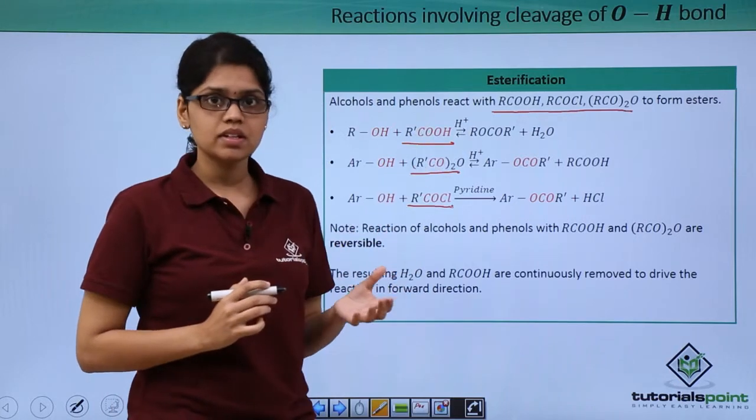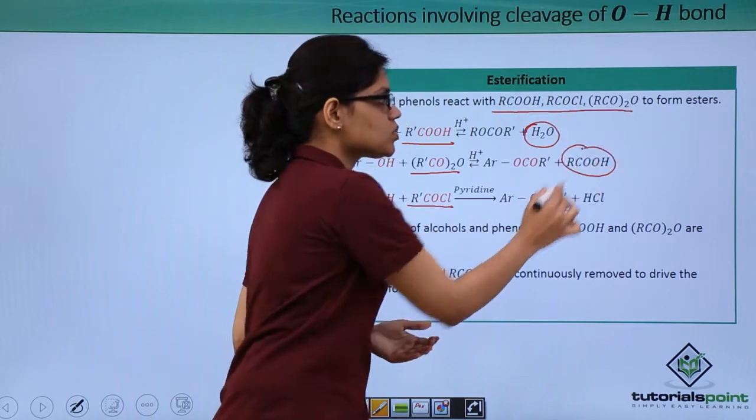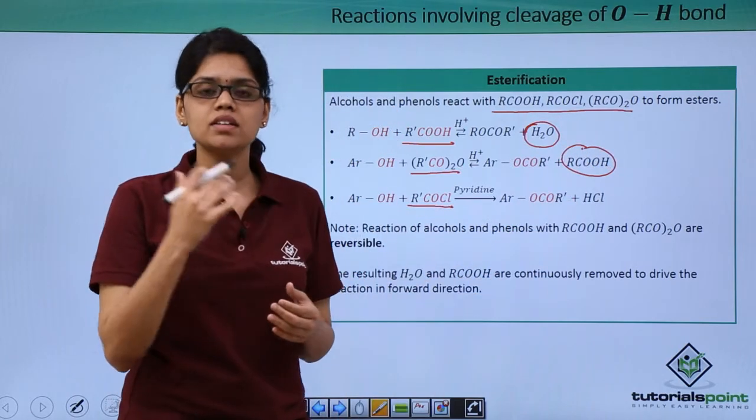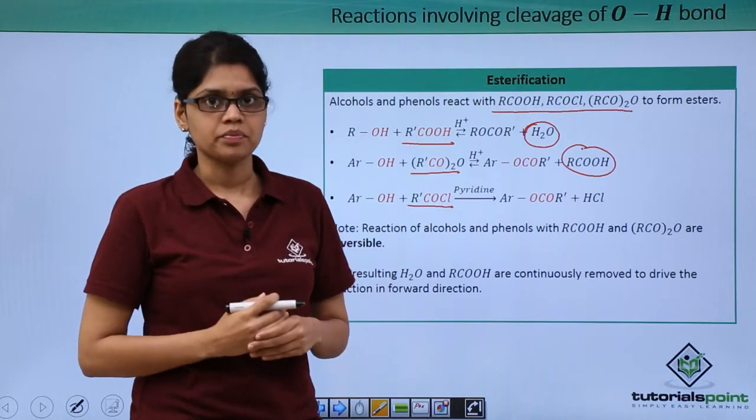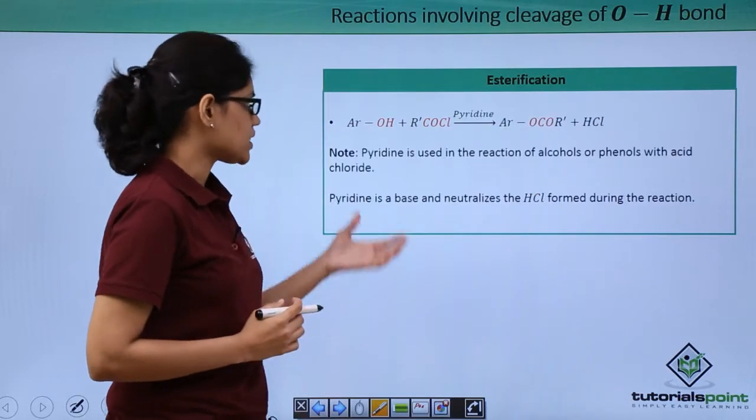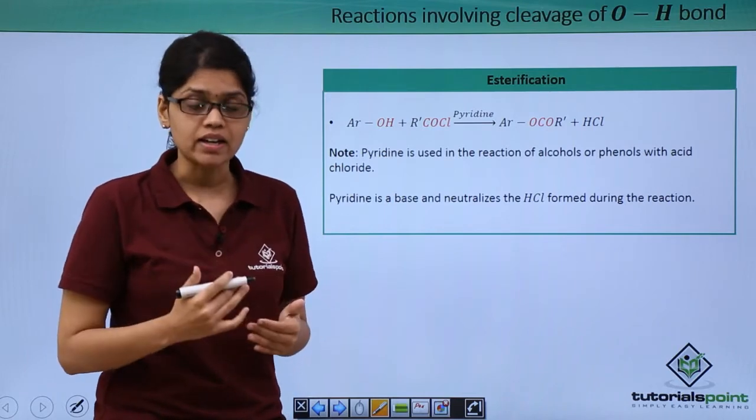Since these are reversible in nature, the byproducts obtained in each of these reactions, which is water and acid, need to be continuously removed in order to drive the reaction in the forward direction. Now as you can see in this reaction where we are reacting an alcohol or a phenol with acid chloride, we usually employ a very strong base like pyridine.